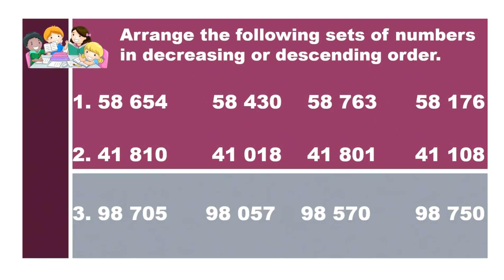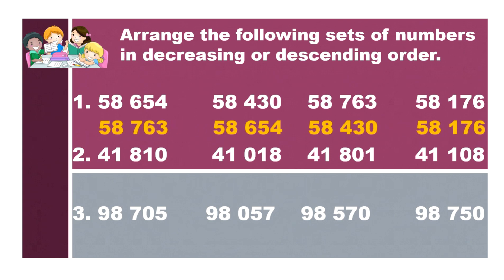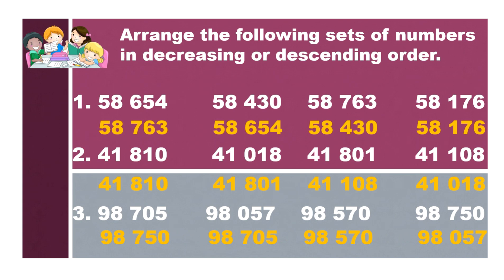Let us check your answers. You are arranging the following numbers in decreasing or descending order. For number 1: 58,763, 58,634, 58,130, and 58,176. For number 2: 41,810, 41,801, 41,108, and 41,018. For number 3: 98,750, followed by 98,705, next is 98,570, and the last is 98,057. If you got the perfect score, good job! Great Grade 4!